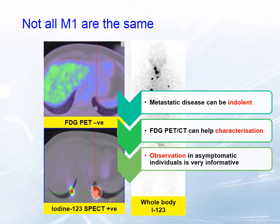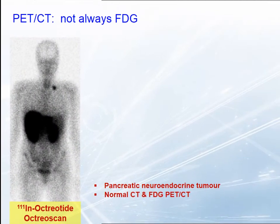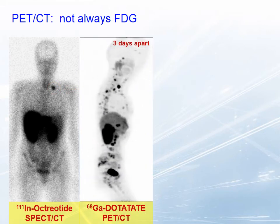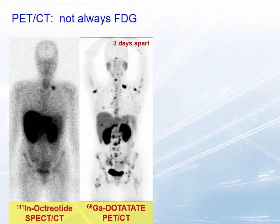Iodine is a very specific tracer, only taken up by thyroid cancer. This is the direction molecular imaging with PET-CT is moving — increasingly specific tracers for particular cancers. This patient with a neuroendocrine tumor had an indium octreotide scan targeting the somatostatin receptor on neuroendocrine tumor cell surfaces, showing a solitary left supraclavicular nodal metastasis. On the same receptor but using a new PET tracer, gallium-68 dotatate, three days later we saw extensive metastatic disease. Clearly targeting that so-called solitary metastasis would have been inappropriate.